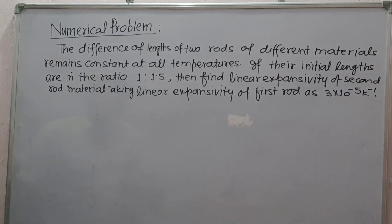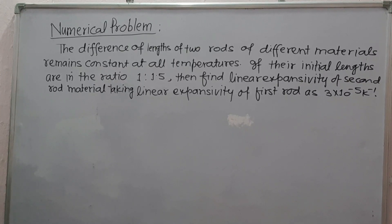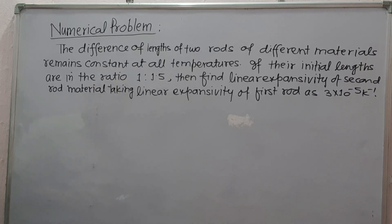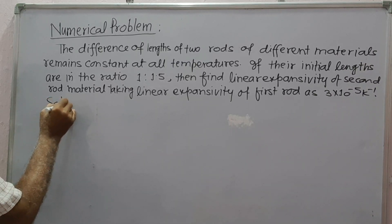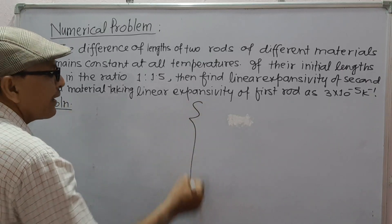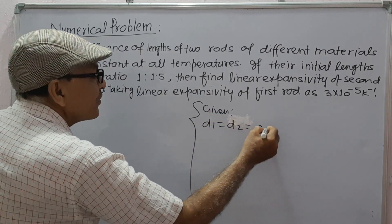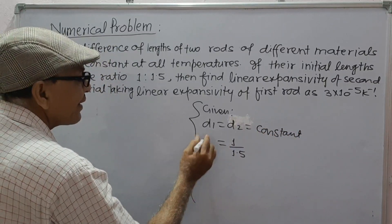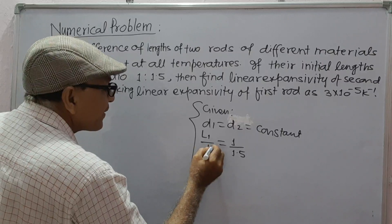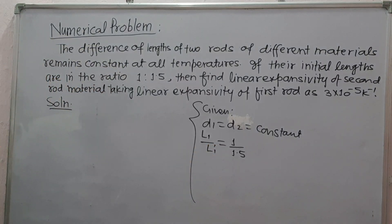The difference of lengths of two rods of different materials remains constant at all temperatures. If their initial lengths are in the ratio 1 to 1.5, find the linear expansivity of the second rod material. Given: linear expansivity of the first rod, alpha, is 3 into 10 to the power minus 5 per Kelvin. Let D1 equals D2 equals constant, and L1 upon L1 dash equals 1 upon 1.5.